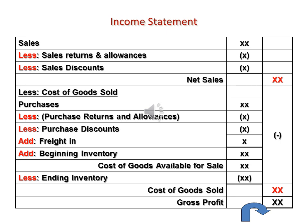The cost of goods sold is then deducted from net sales, giving gross profit. Gross profit is the first step for the multiple-step income statement.